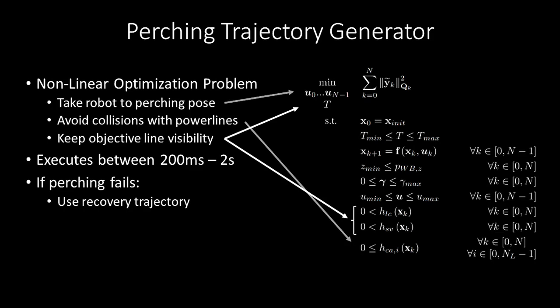The problem can be solved onboard the quadrotor in a matter of seconds before the trajectory begins. The same optimization can be used to compute a recovery trajectory that takes the robot to a safe state in the event that the perching is not performed successfully.